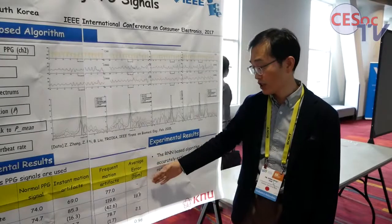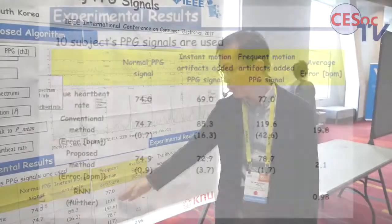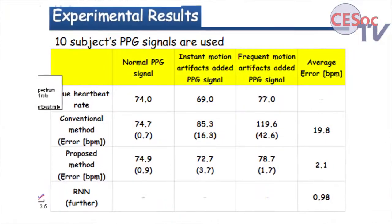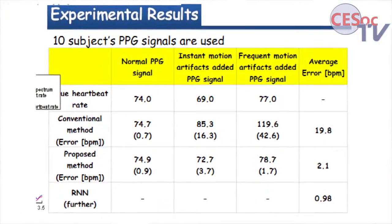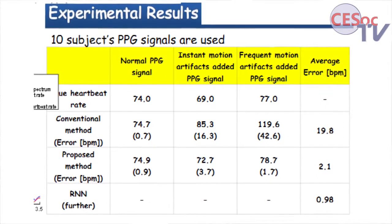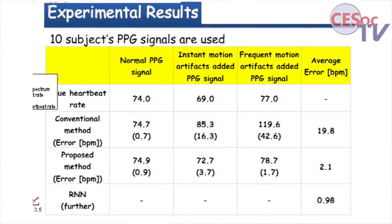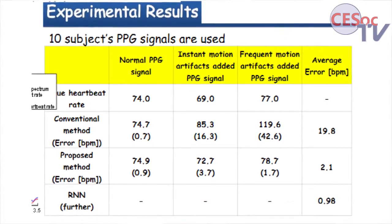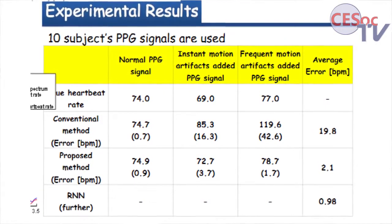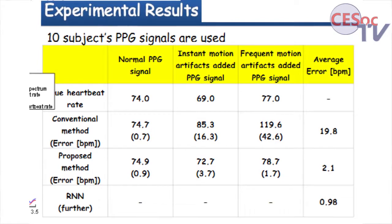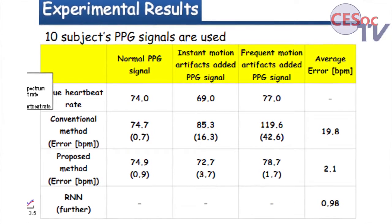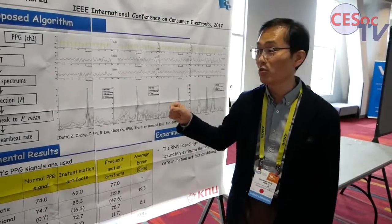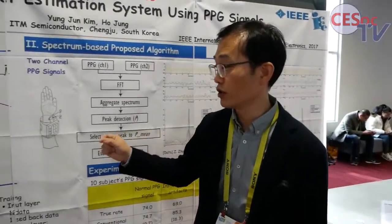Looking at the result: this is the conventional way — that means with only one sensor, the error is around 20 beats per minute. For our proposal, it has been reduced significantly, to only 2.1. We have also proposed another approach.